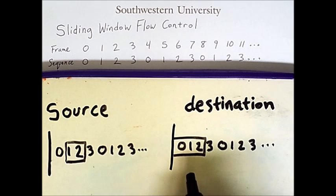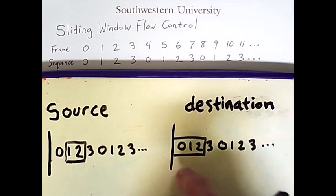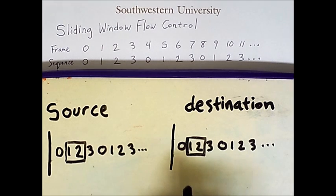When the destination receives the frame with sequence number 0, its window will get smaller in a similar fashion. So far, the destination has received frame 0 but has not acknowledged it yet.